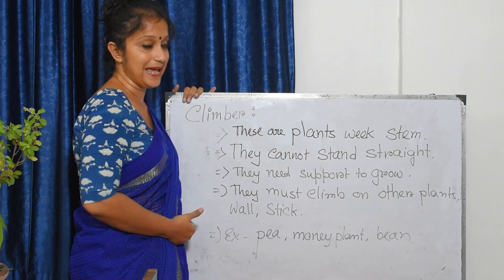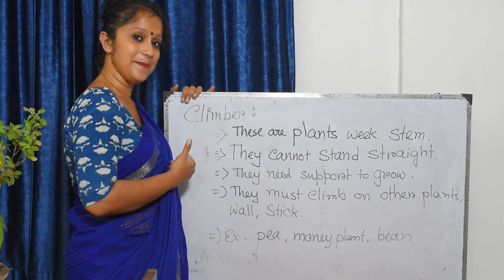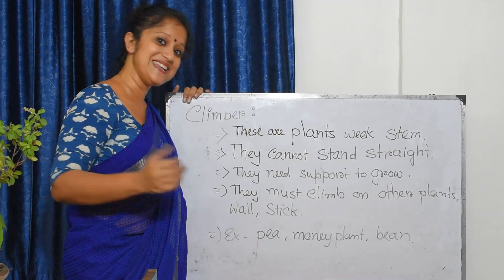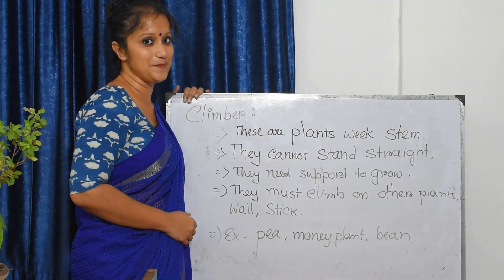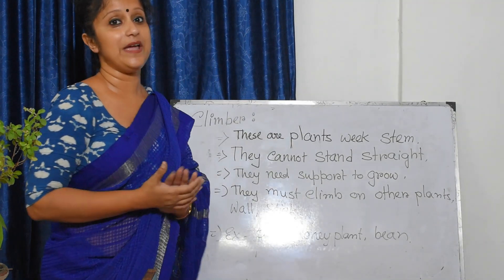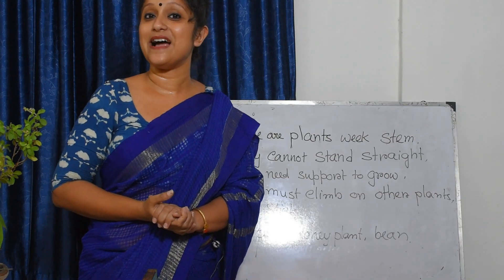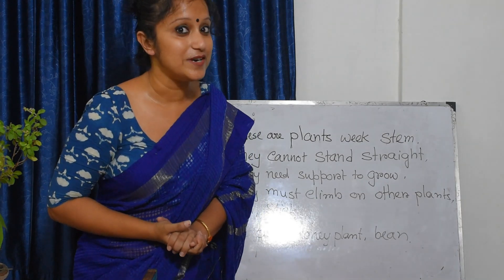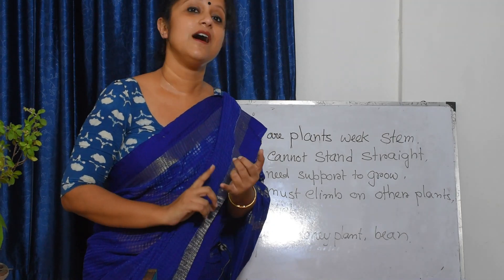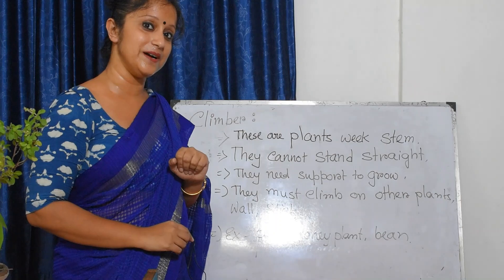The examples of climbers are pea, money plant, and bean. So children, today we have learned about some types of plants. They are trees, herb, shrub, and climber.